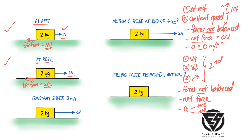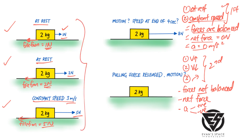In the third scenario, you increase the pulling force to 5 Newtons, and the box is now moving at constant speed in a straight line at 3 meters per second. This is still Newton's first law — forces are balanced, net force is zero, no acceleration. The opposing friction force must be 5 Newtons, equal and opposite to the pulling force, for the net force to be zero, hence it moves at constant speed.